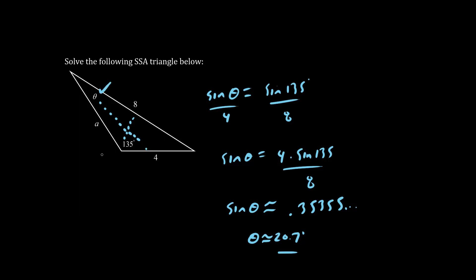So now that we have theta, let's solve for the other unknown. We'll call this alpha. Alpha equals 180, that's the total angle for a triangle, minus 135, that's one angle, minus theta, which is this number here. So what is this unknown angle here? It is about 24.3 degrees.